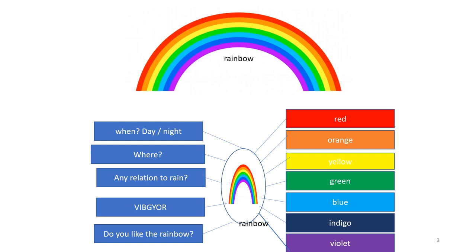Let me explain what exactly we need to draw a mind map. The main idea — rainbow — I placed in the center, and the supporting ideas: I want to tell about the colors in their order. So I brought Red, Orange, Yellow, Green, Blue, Indigo, Violet. I arranged all the colors linked to the main idea on the right side. I wanted to make it a coined word so that children can easily remember using VIBGYOR.